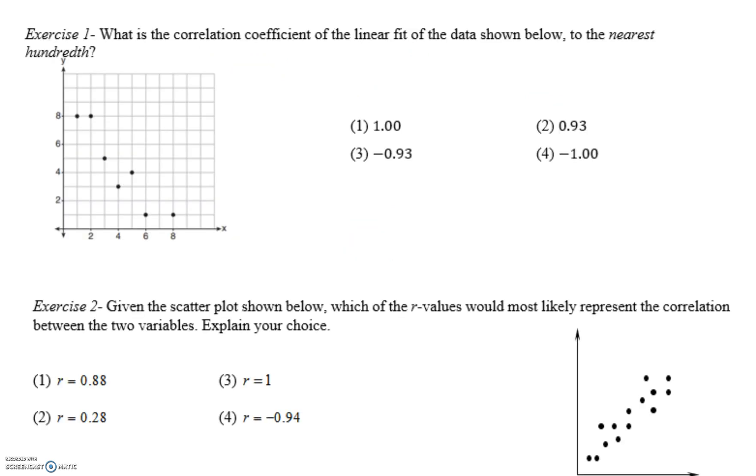For this next question, it says, what is the correlation coefficient of the linear fit of the data shown below to the nearest hundredth? So as we read from left to right, we should notice that all our dots are trending downward, which means we're going to have a negative correlation. It can't be 1 or 2 because they're both positive numbers. And if we look at the dots, they do not form a perfectly straight line, so it can't be negative 1. Therefore, the best answer would be choice 3.